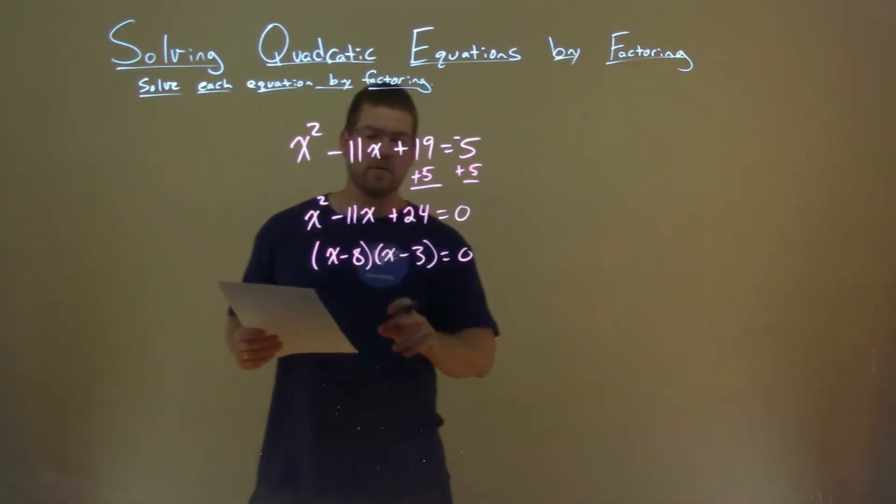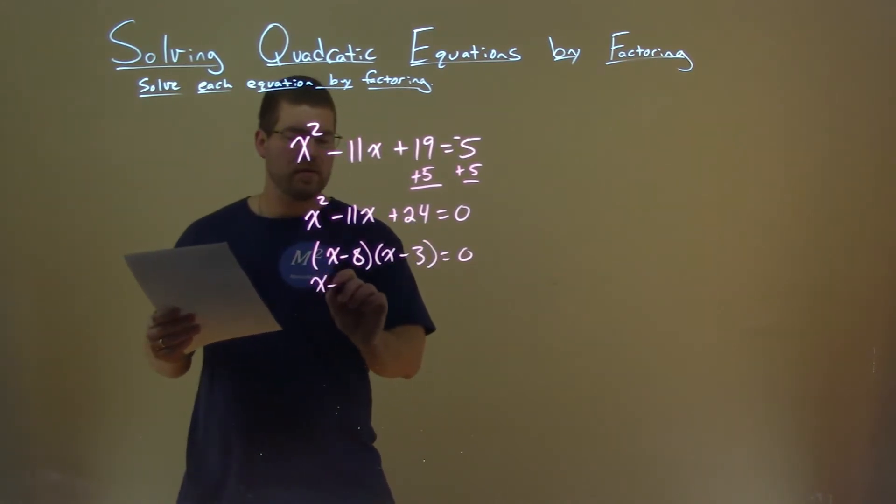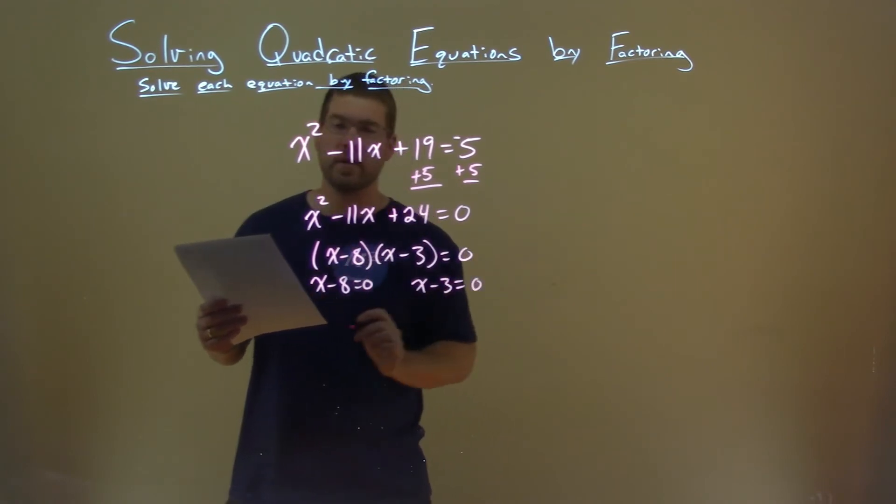Okay, so now we have the factored form, now we need to set both parts equal to 0. So x minus 8 equals 0 and x minus 3 equals 0.